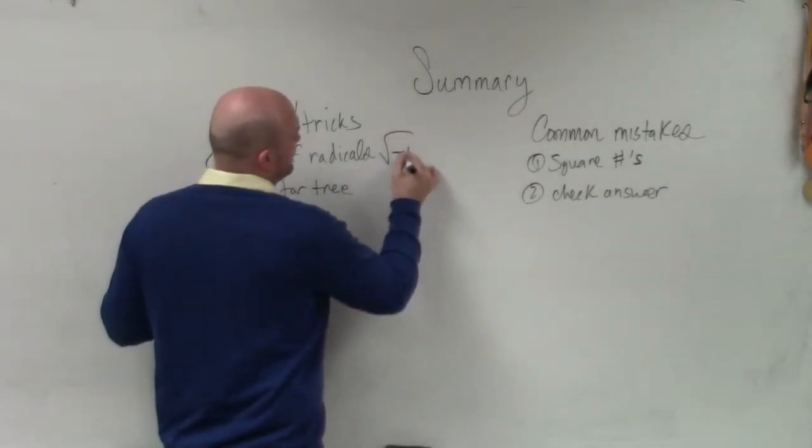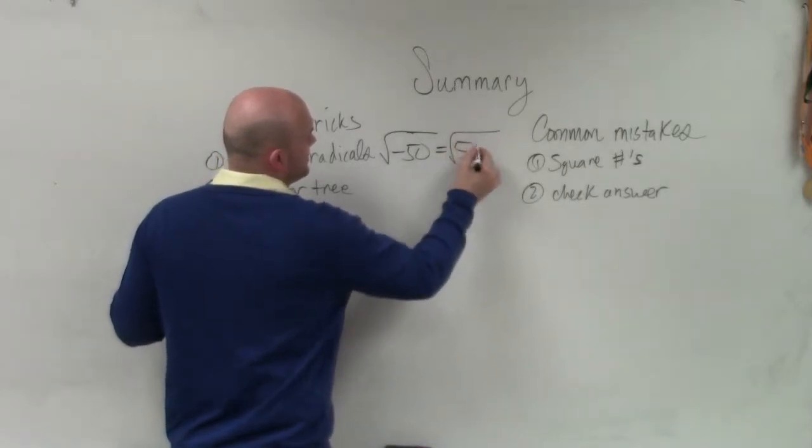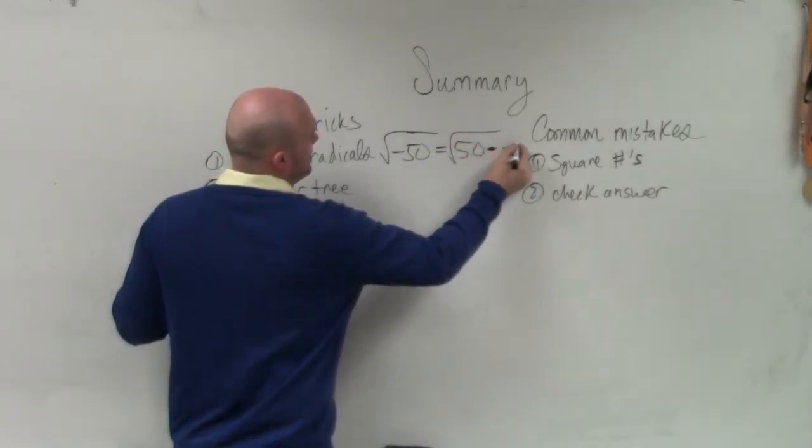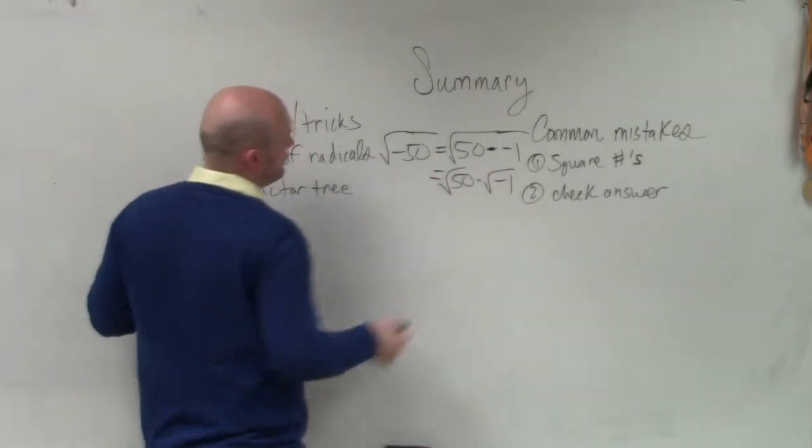For instance, square root of negative 50, we can rewrite that as the square root of 50 times negative 1. And then that can be broken up into the square root of 50 times the square root of negative 1.